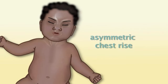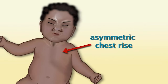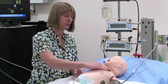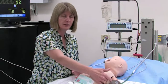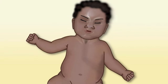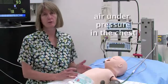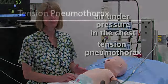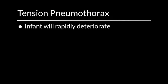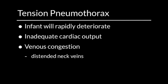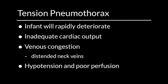Pneumothorax may lead to asymmetry of chest rise and asymmetric breath sounds. One of the reasons it's important to auscultate laterally on an infant is that breath sounds can transmit if one only listens apically; to hear true asymmetry you want to get as lateral as you can. The real hallmark, if the pneumothorax is continuing to accumulate, is air under pressure in the chest known as a tension pneumothorax. When that occurs, the infant will fairly rapidly deteriorate with not just respiratory distress but inadequate cardiac output, and signs of venous congestion like distended neck veins.